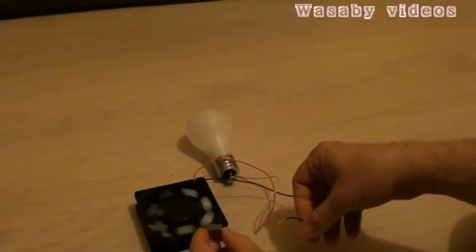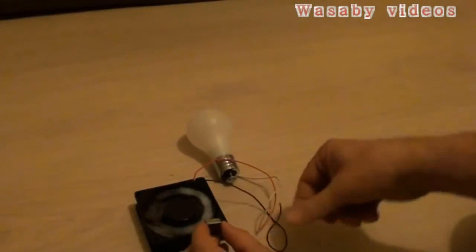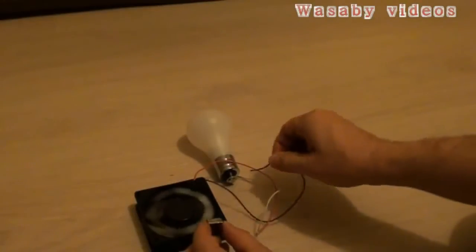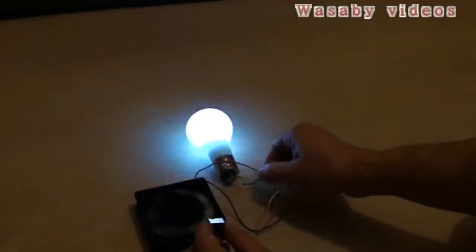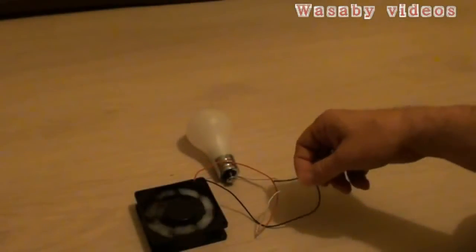We will start the rotation, okay it's rotating already, and now I will put this wire here. Okay, we can see it is lighting. When I put it off, it is not lighting.